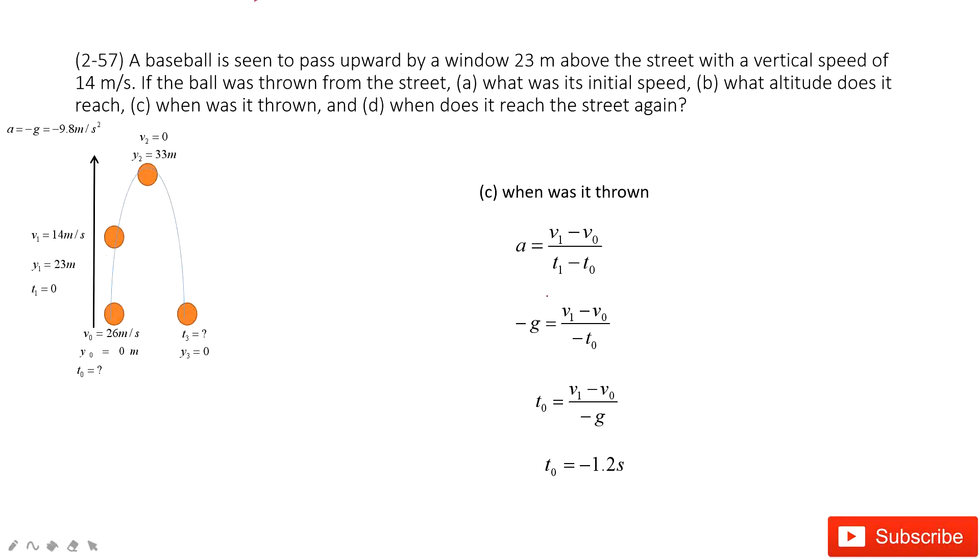And then the fourth problem. When does it reach the street again? So it moves from the street and then window and then peak. And finally it falls down to the reference point. Ask you the time t3 takes. So ask you the time t3 takes. We can see, we can consider the initial position is 0. Final position is 0. y0 is 0. y3 is 0.